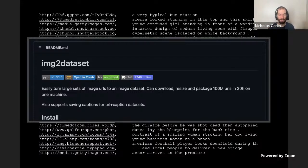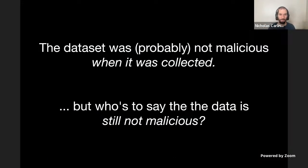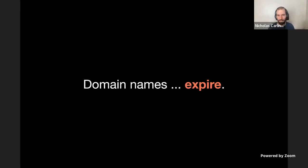So basically, people don't distribute these datasets by themselves. LAION-5 billion exists like this — it's essentially a big giant CSV with 5 billion rows of URLs and captions. Now here's where the attack comes in. This dataset was probably not malicious when it was collected. I know the people who built LAION-5 billion; they seem like entirely reasonable people. But who's to say the dataset is not still malicious today? The main observation we make is that domain names expire.